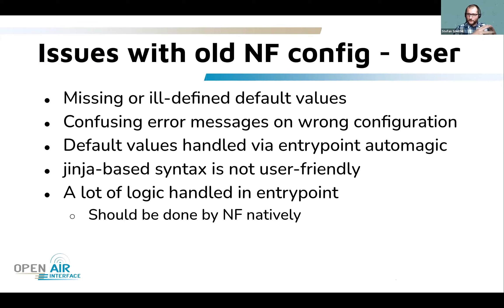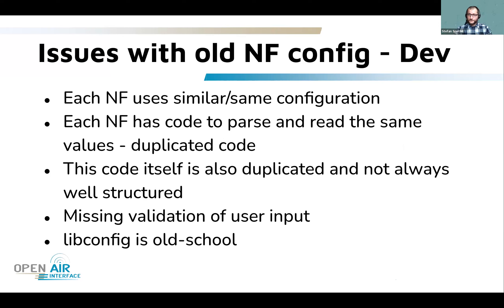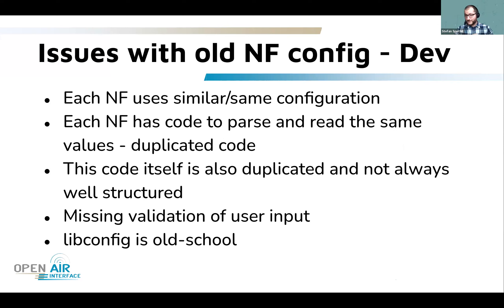For developers, each network function uses similar or even the same configuration. Therefore each network function has code to parse and read the same values, which means across all our repositories we have a lot of duplicated code. The code inside the network functions is also not always well-structured. There is also missing validation of user input, which causes unexpected errors and is also a security problem. Additionally, libconfig — the library we currently use — is somewhat old-school in its syntax.